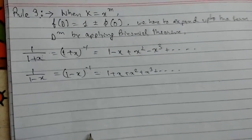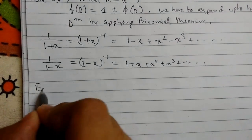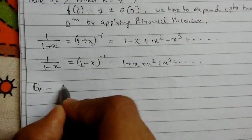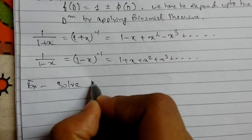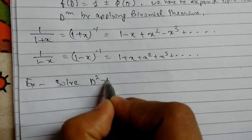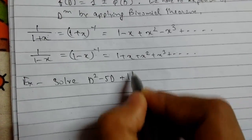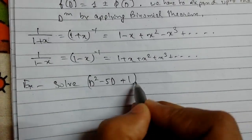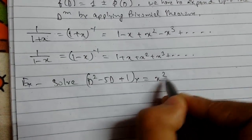Let us see an example so we can understand this. Example: solve (D² - 5D + 1)y = x².